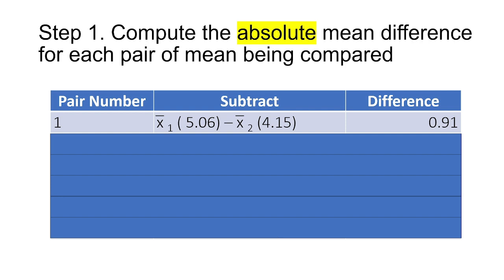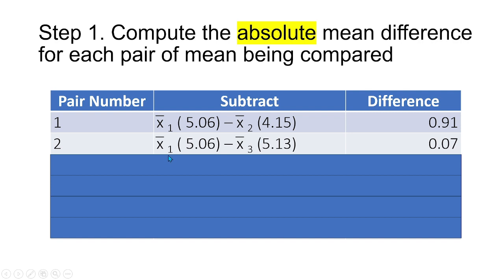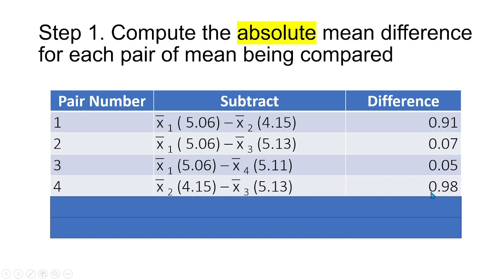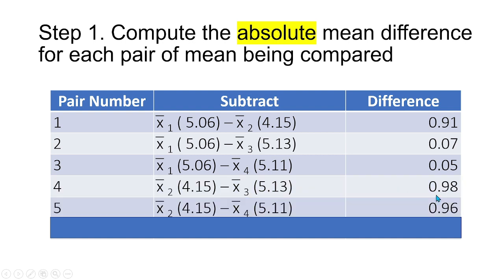Now, to begin with, step one is to compute the absolute mean difference for each pair of mean being compared. So in this case, we are going to subtract 4.15 from 5.06, so the difference is 0.91. For the second group, mean sub 1 minus mean sub 3. So 5.06 minus 5.13 equals negative 0.07. But because we are getting the absolute value, we remove the negative sign. So also for pair number 3, this is mean sub 1 against mean sub 4. We subtracted 5.11 from 5.06, so the difference is negative 0.05, but we again remove the negative sign because we are dealing with the absolute value. And so this is the difference for pair number 4, 5, and 6.